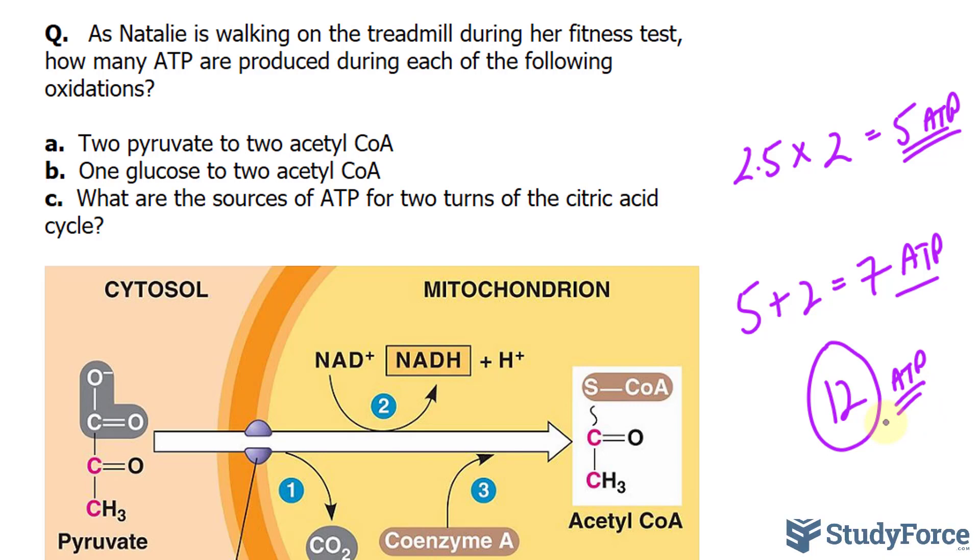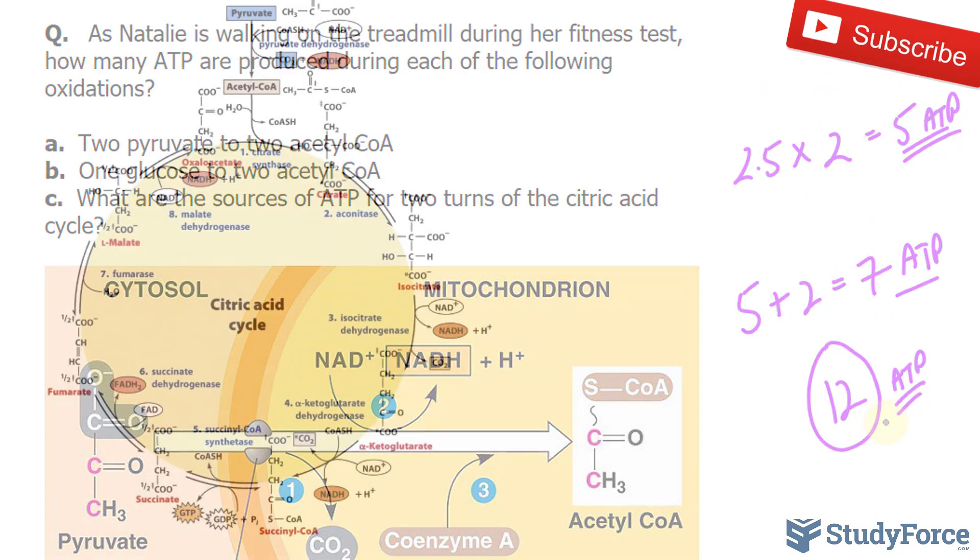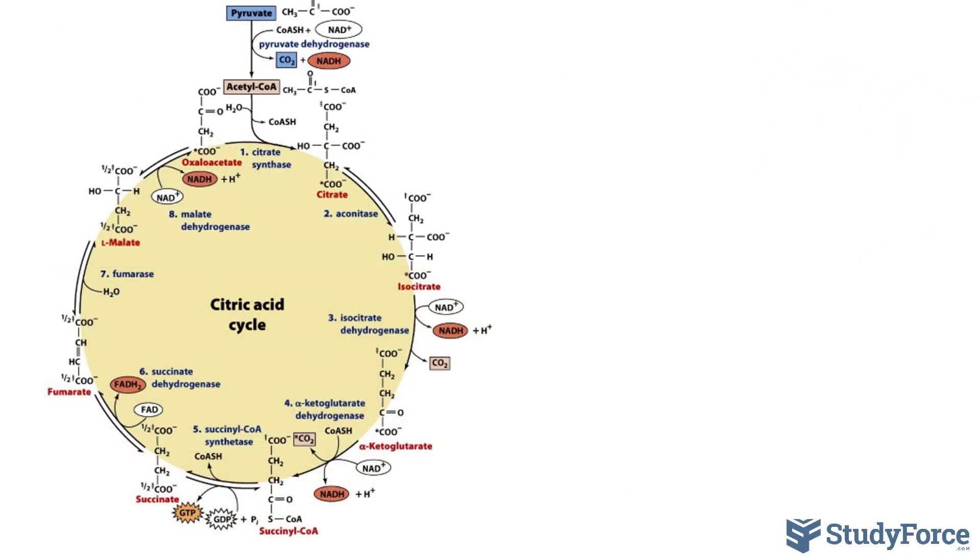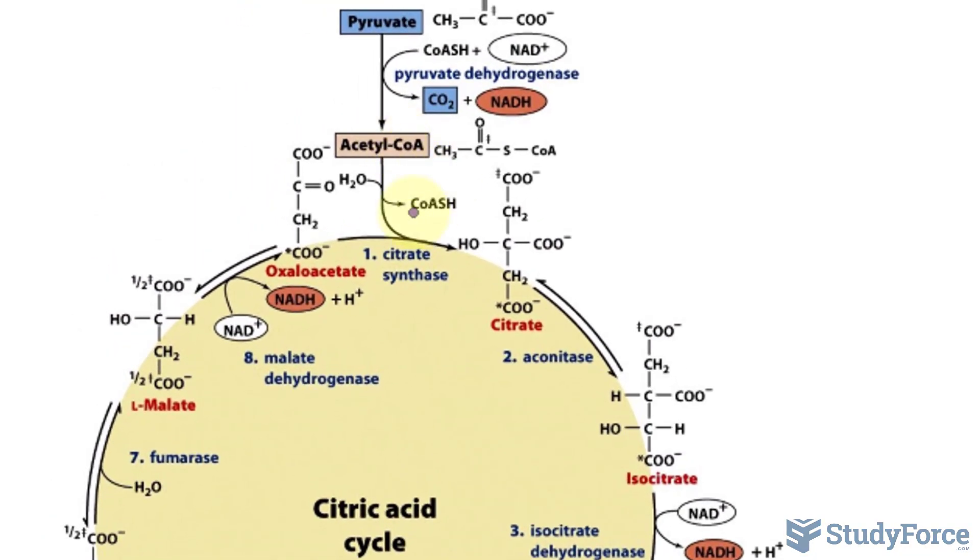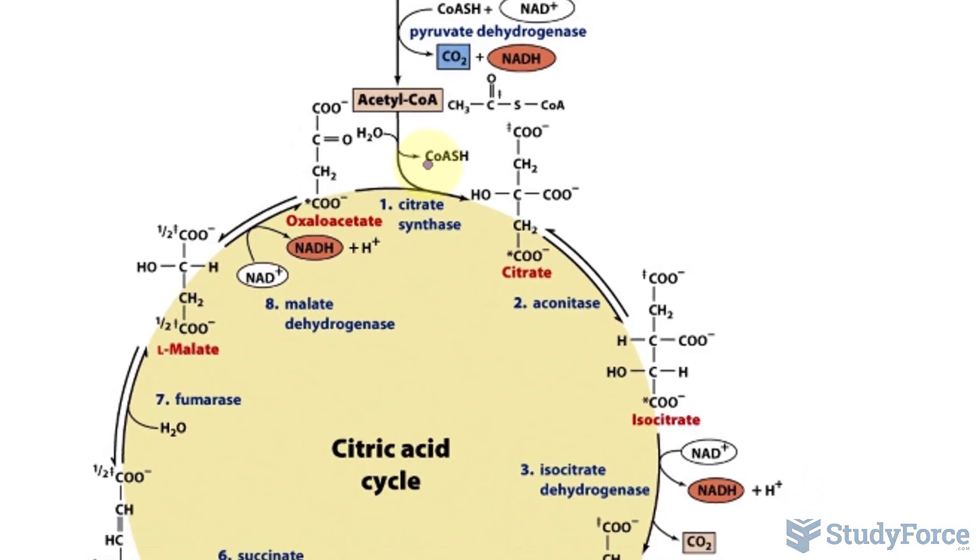Question C, what are the sources of ATP for two turns of the citric acid cycle? Let's take a look at the citric acid cycle. Here we have a thorough illustration of the citric acid cycle, and what gets fed into it is acetyl-CoA. For simplicity's sake, we can say that this is stage two in cellular respiration.